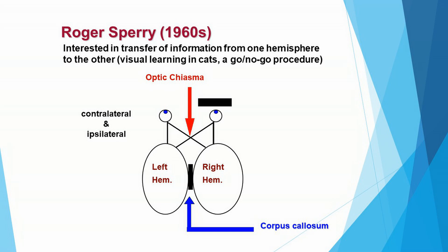He was interested in how information about a task like that would be transferred from one hemisphere to the other. Here I'm showing you a diagram of a cat and the connections between the eyes and the brain. The left eye goes straight back to the left hemisphere via the optic nerve, but it also goes over directly to the right hemisphere. Likewise, the right eye has connections to the left hemisphere but also directly back to the right hemisphere.